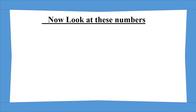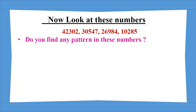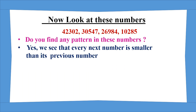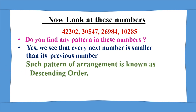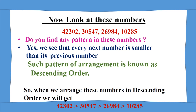Children, now look at these numbers: 42,302; 30,547; 26,984; 10,285. Do you find any pattern in these numbers? Yes, we see that every next number is smaller than its previous number. Good. Such pattern of arrangement is known as descending order. So, when we arrange these numbers in descending order, we get 42,302, which is greater than 30,547, which is greater than 26,984, which is greater than 10,285.